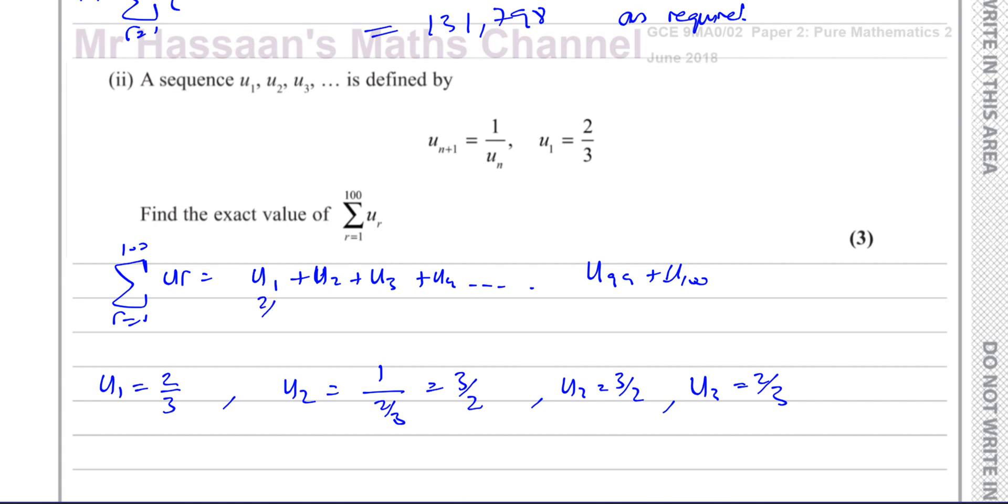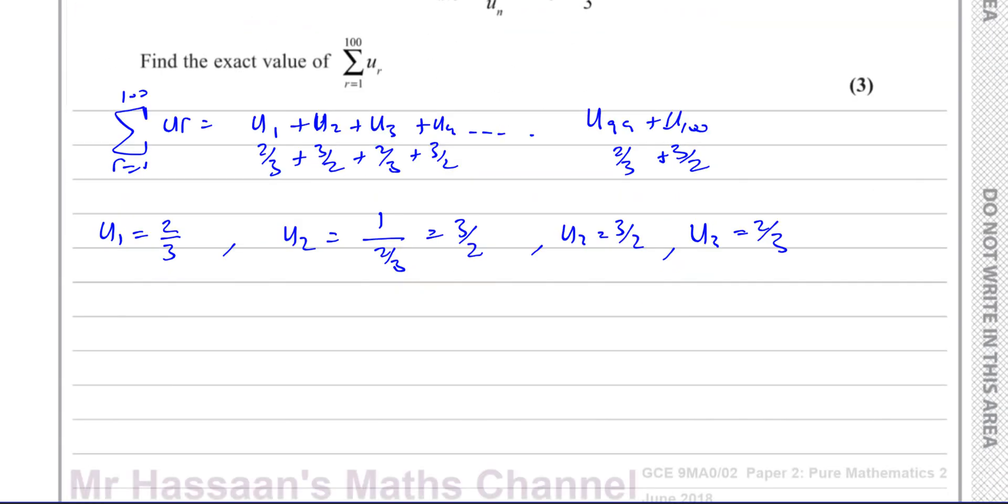You're going to have basically the first term is two thirds, and then this is going to be 3 over 2, two thirds, three over 2, all the way up to, now you can see here all the even terms will be 3 over 2, and all the odd terms will be 2 over 3. So you can see there's 100 terms. If you want, you can do it in two ways. You can say we're going to have 50 two thirds and 50 three over 2s. So you can say this is 50 times two thirds plus 50 times 3 over 2. Because there's 100 of them, there's going to be half of them, half of them are going to be two thirds, the other half are going to be 3 over 2. So you can just add those together.